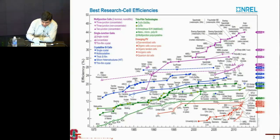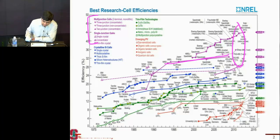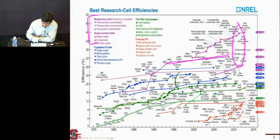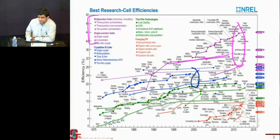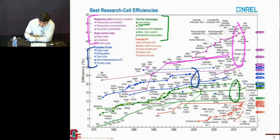We talked about multi-junction cells, which are at the higher end of this pyramid. We talked about what happens to them when you use them under concentration. Then we talked about crystalline silicon-based cells, and we spent quite a few weeks on those crystalline silicon technologies. Then we focused on different thin film technologies, starting with CIGS, which has the highest efficiency among all these technologies, then CdTe, which is slightly below that, and then amorphous silicon, which doesn't give you very high efficiency.